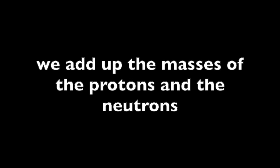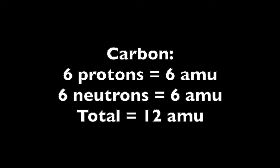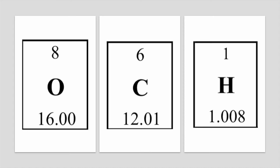The mass of electrons is so small that we can ignore it when we talk about the mass of an atom. If we want to know the atomic mass of a single atom, we add up the masses of the protons and the neutrons. For example, to calculate the approximate mass of a carbon atom, we add up 6 protons and 6 neutrons and get an atomic mass of 12 atomic mass units.